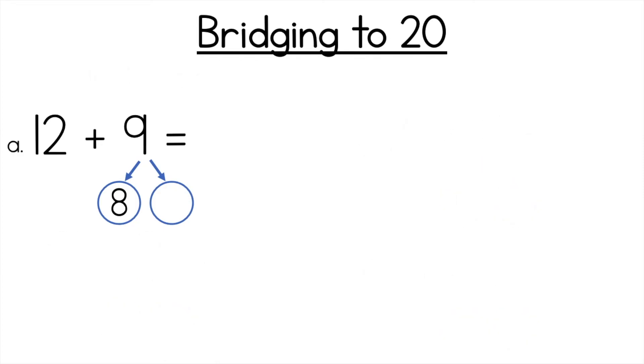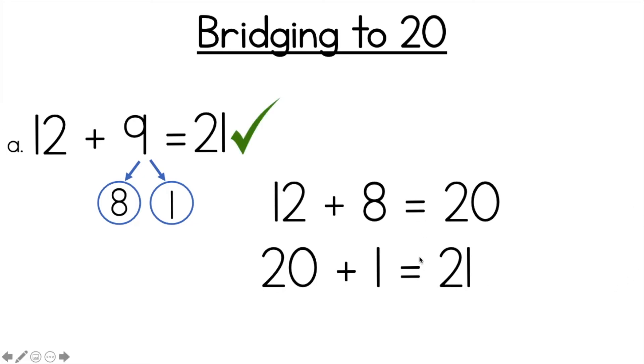Okay so let's go through the answers. 12 plus 9. Okay so I know that 12 plus 8 and then 8 plus what equals 9? 8 plus 1 equals 9. So you should have done 12 plus 8 is 20. Make friends of 20 because we're bridging to 20. So that one's done. Now you just have to do the last one. So 20 plus 1 is 21. So if you got 21 and you did it this way you can give yourself a big tick.